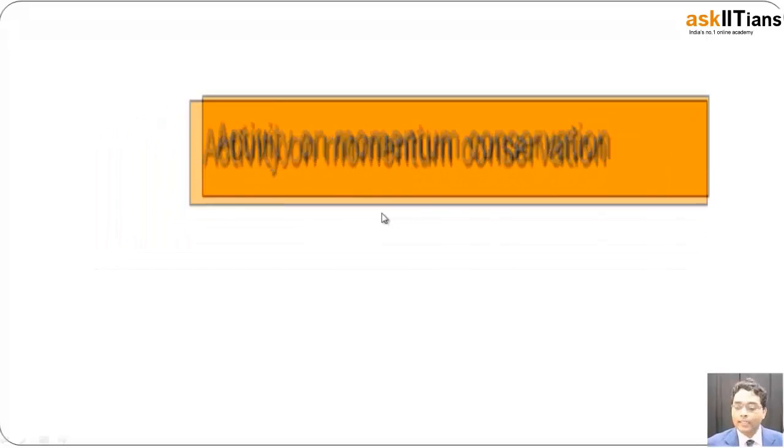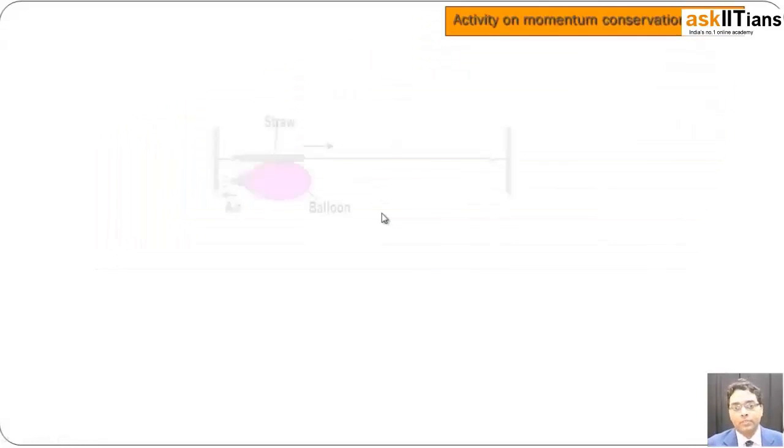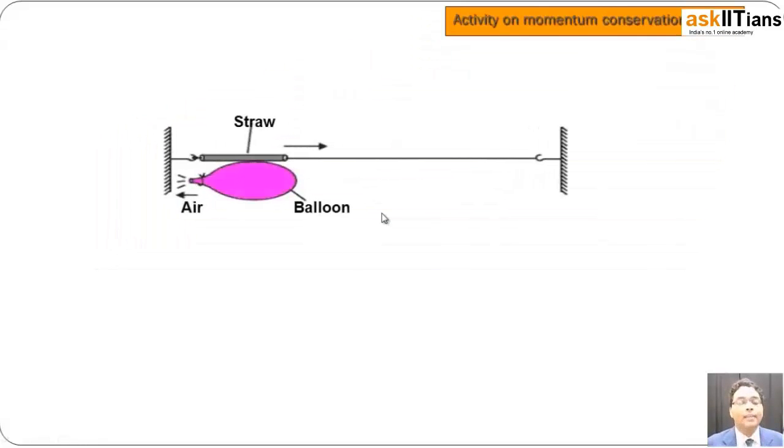Let's understand it using some activities on momentum conservation. First one: if you have a straw and to that straw you fix a balloon, if we allow the air to come out of the balloon from one end, it is going to make the balloon move in the forward direction.